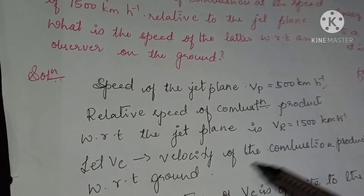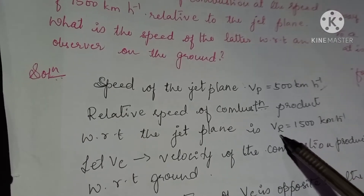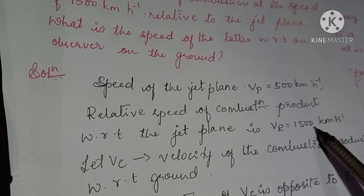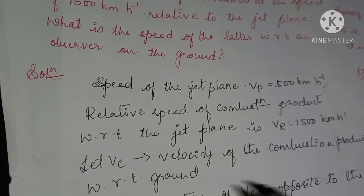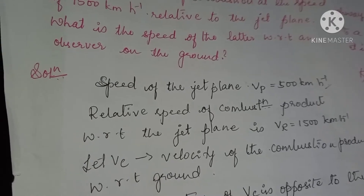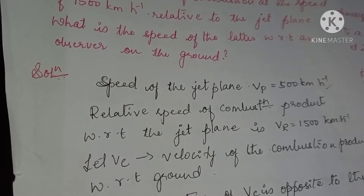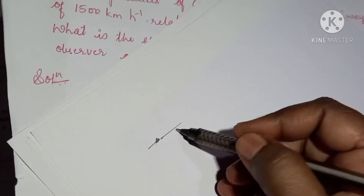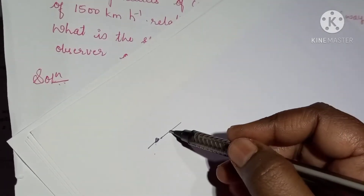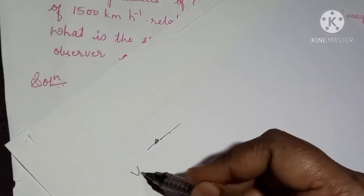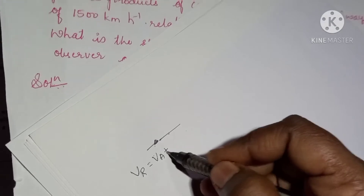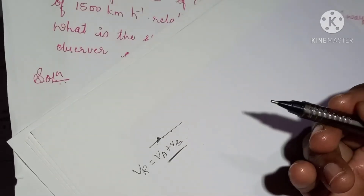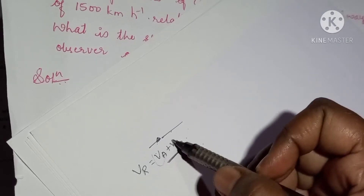The speed of the jet plane is 500 km per hour, and the relative speed of the ejected combustion gases is 1500 km per hour. The combustion gases move in the opposite direction to the jet plane — if the jet plane moves forward, the ejection is backward. When two velocities are opposite to each other, the relative velocity equals VA plus VB.